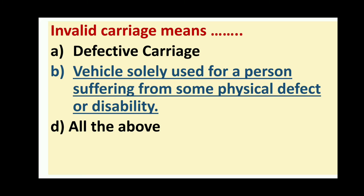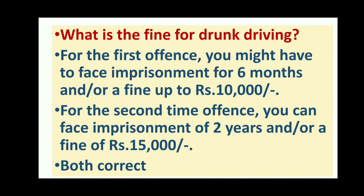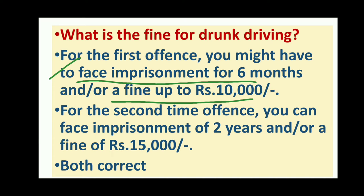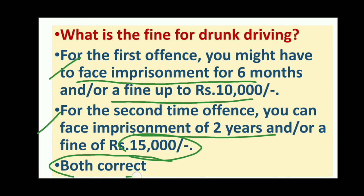Invalid carriage means a vehicle only used for a person suffering from some physical defect or disability. What is the fine for drunk driving? For the first offense, imprisonment up to 6 months and fine up to 10,000 rupees. For the second offense, imprisonment up to 2 years and a fine of 15,000 rupees. Both options are correct.